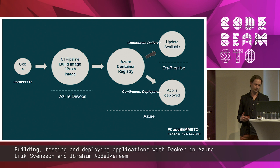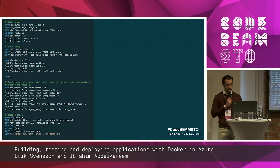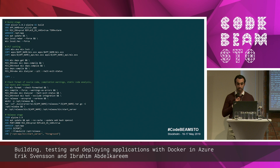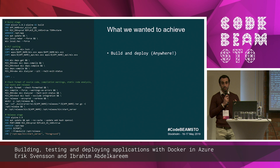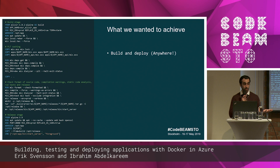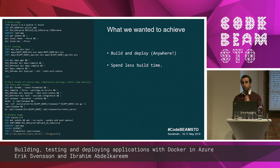At the core of this we have the Dockerfile, which is a recipe for what the container should contain. Here on the left side we have our Dockerfile that we use to build and package our Elixir applications. What we want to achieve first is to build and deploy anywhere — today we're deploying on Azure, tomorrow we might deploy on AWS or on-prem — and we want to do that with minimum effort. We also want to spend less time building, because build time translates to time and cost.